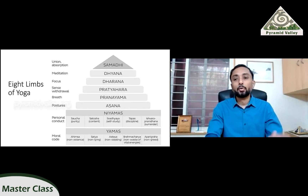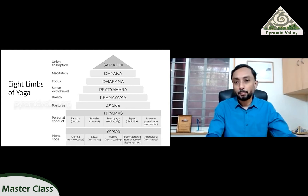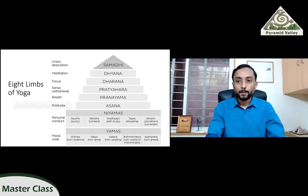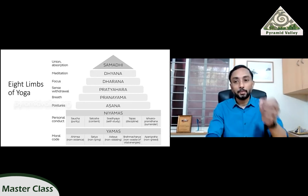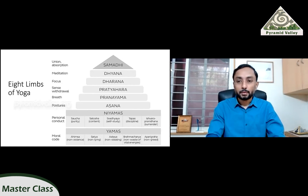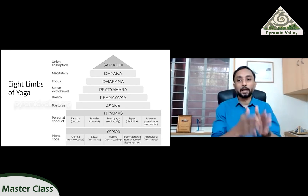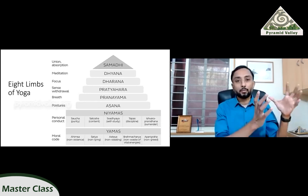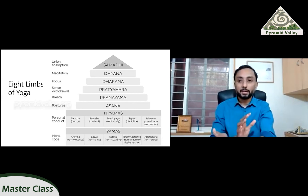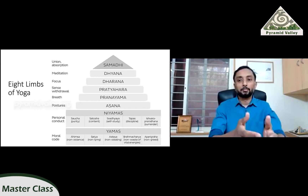All these apply both to the gross materialistic world and to subtler things. When we say stealing, it's not just about stealing someone's property — it's also about stealing thoughts, stealing ideas, stealing emotions. If someone is feeling very angry about a situation, it doesn't mean one should feel angry because that emotion is told to them. Moderation and non-greed are not just about accumulation of wealth — it's also about accumulation of pain, joy, or knowledge. Everything needs to be at a moderate, balanced level — the middle path.